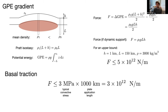For basal traction: convective stresses in the mantle are of order a few megapascals, applied over plate scales of order a thousand kilometers, giving something like 3 teranewtons per meter or less.